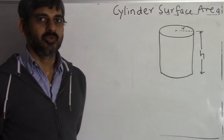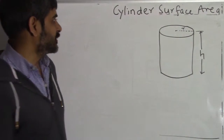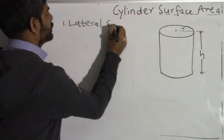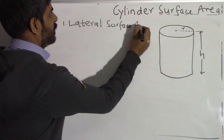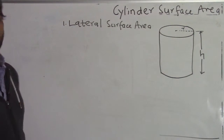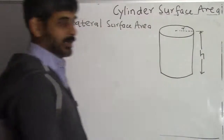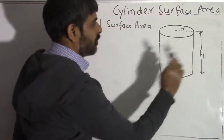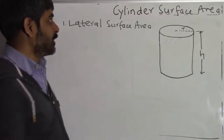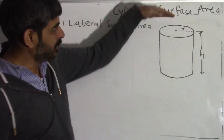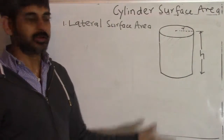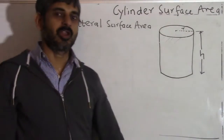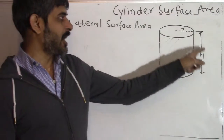For this cylinder we are required to find the lateral surface area. Look at the outside of the cylinder and find the surface area of the surface around it. Don't count anything on the top or bottom of that cylinder. Whatever surface area you see on the lateral surface around this cylinder, we need to find this area in terms of r and h.